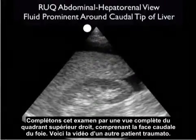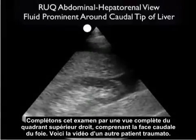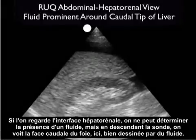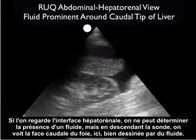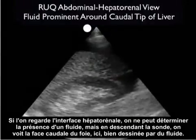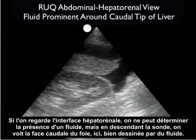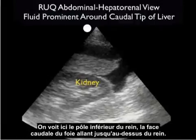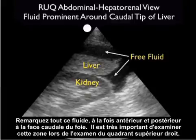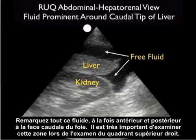To emphasize that a complete right upper quadrant view includes looking at the caudal tip of the liver, let's examine this video clip from another trauma patient. If we look at the hepatorenal interface, we fail to see any fluid, but as we move the probe inferiorly, we see that the caudal tip of the liver is well outlined by fluid. Here we see the inferior pole of the kidney, the caudal tip of the liver extending above it, and fresh fluid both anterior and posterior to the caudal tip — a very important area to examine.